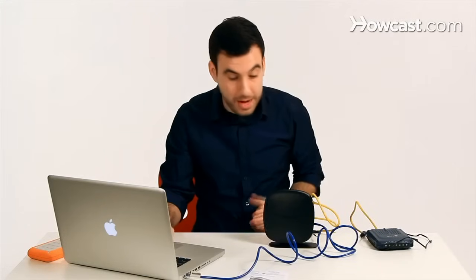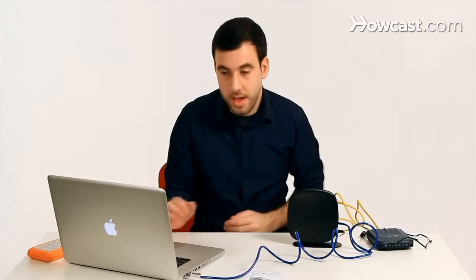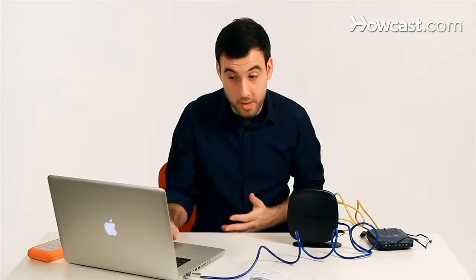So what is happening right now is the computer is talking to the router and it's asking it for something called an IP address, which is kind of like a number that tells the computer, this is who you are on my network. Now, once it gives it an IP address, which would happen very fast and basically automatically,